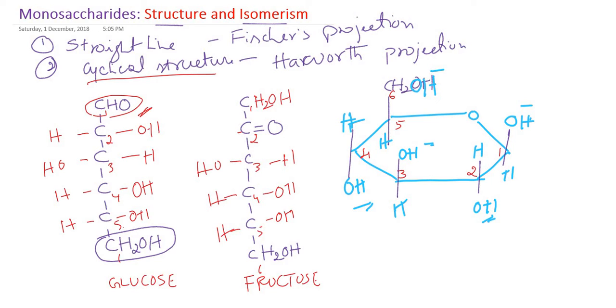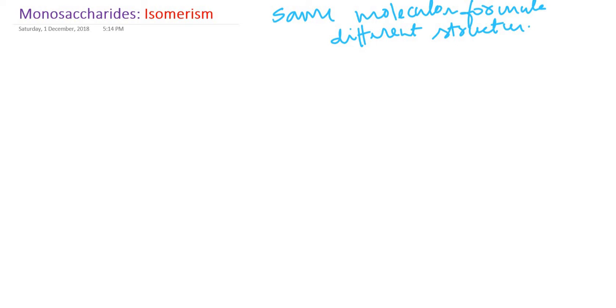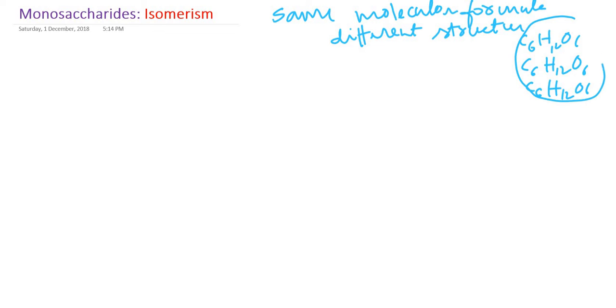Now we will see isomerism. Isomerism means any compound having the same molecular formula but a different structure. For example, glucose is C₆H₁₂O₆, fructose is also C₆H₁₂O₆, and galactose is also C₆H₁₂O₆. All have the same molecular formula but different structures — this is called isomerism.